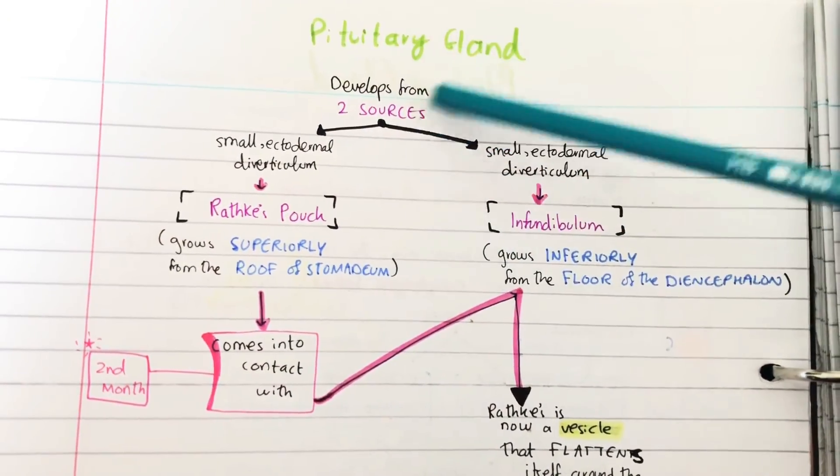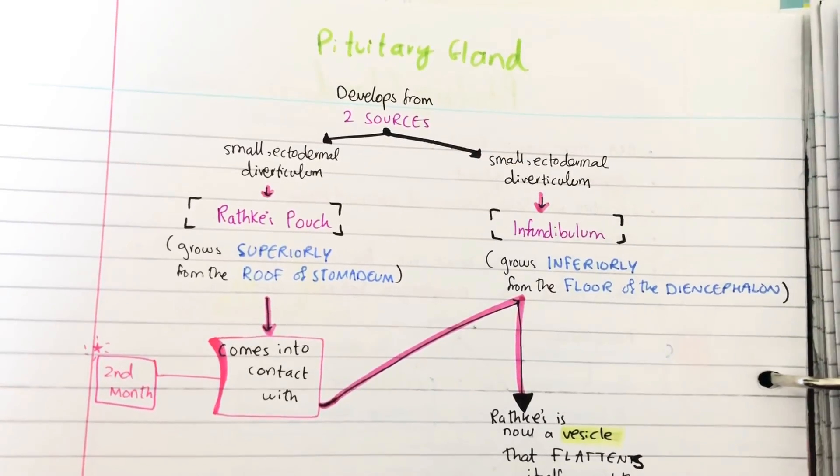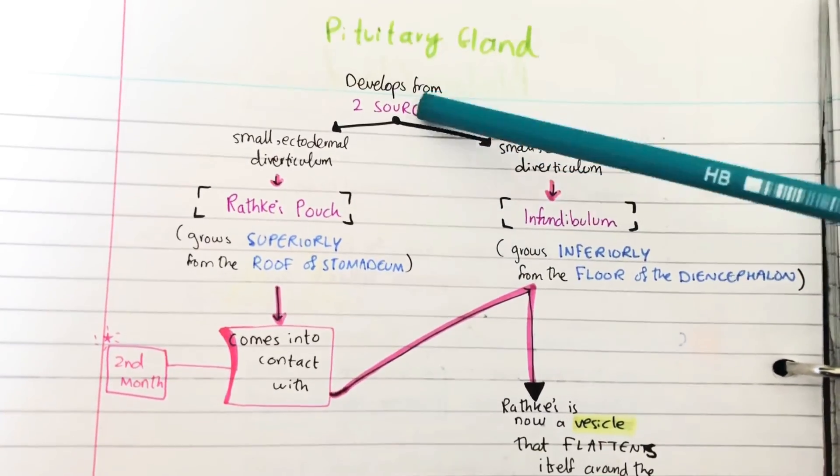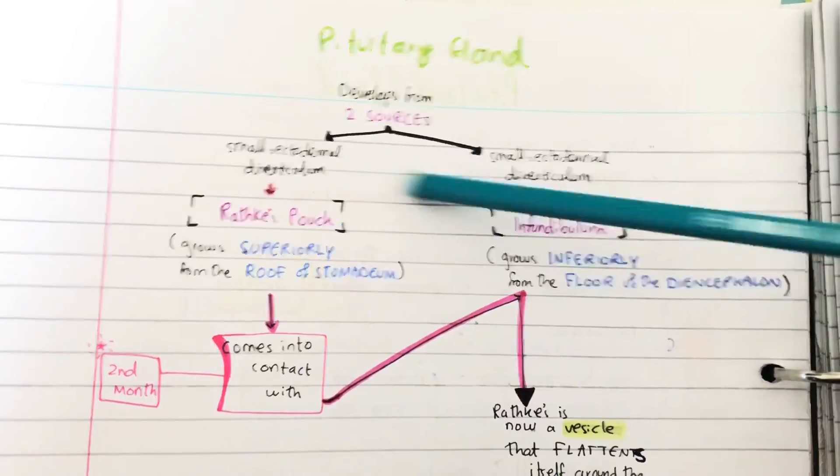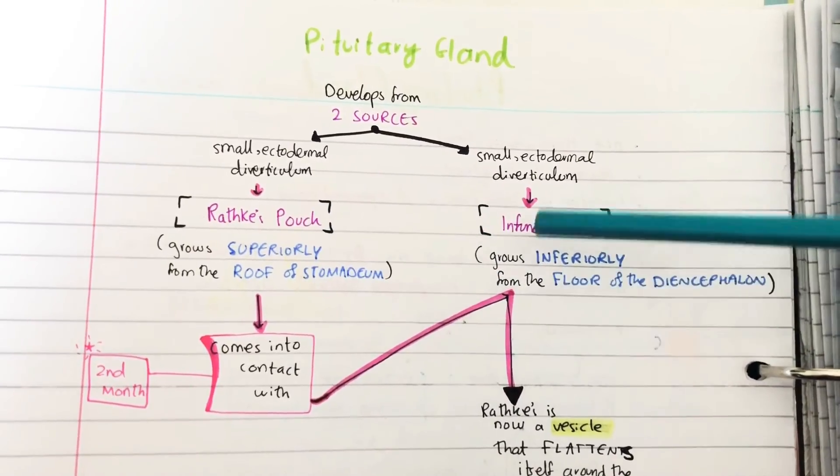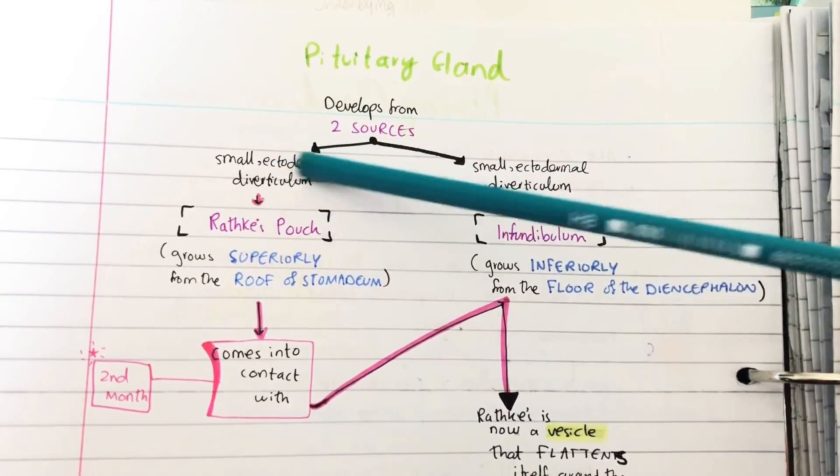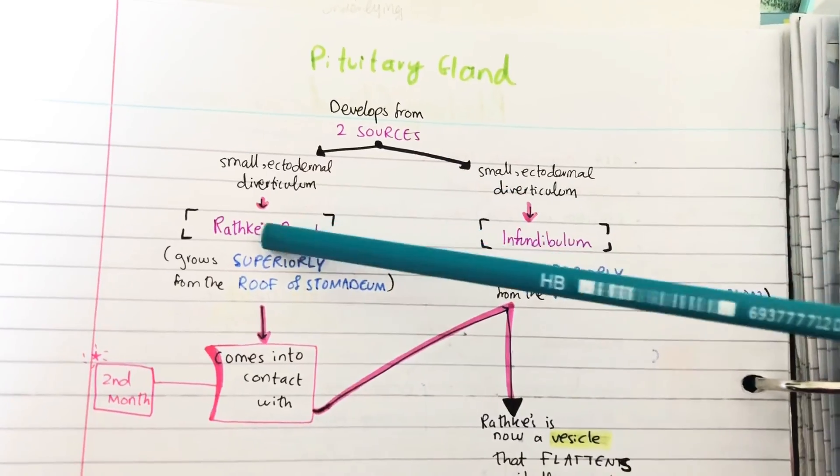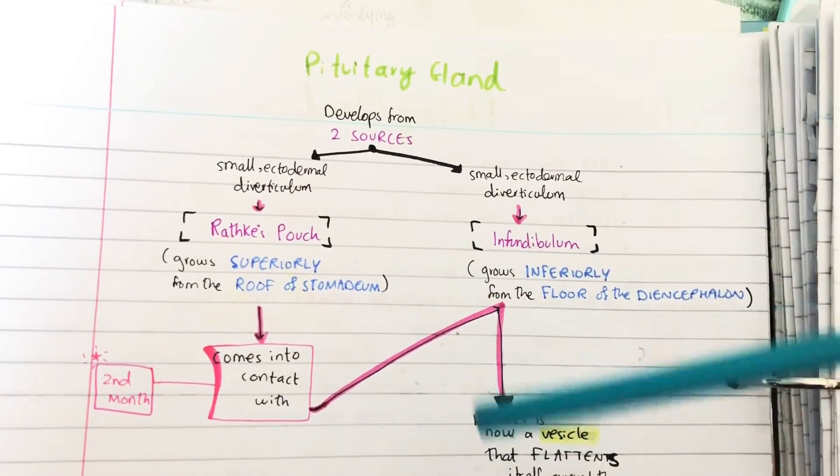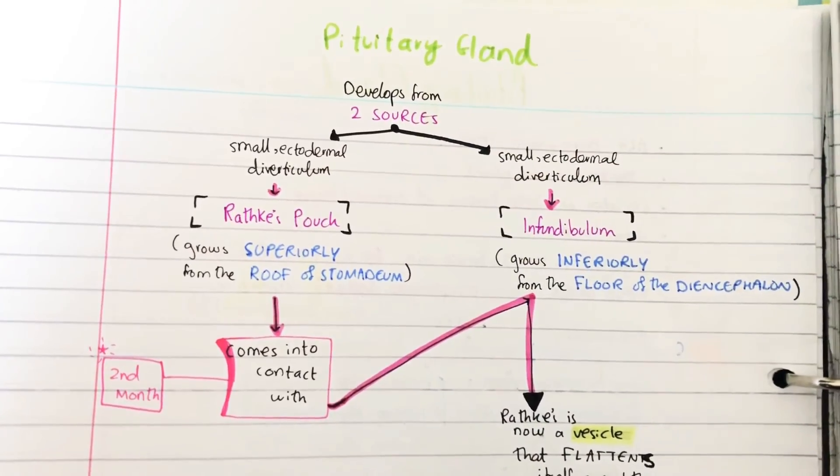Now we're going to talk about the pituitary gland's development, the embryology. It develops from two sources. Both of these sources, the Rathke's pouch and the infundibulum, are just small ectodermal diverticula - that just means a protrusion or invagination of the ectoderm. They're just little swellings.